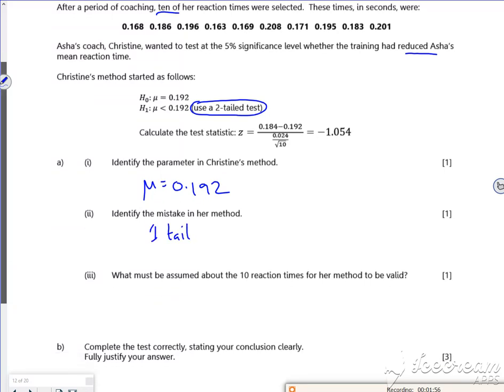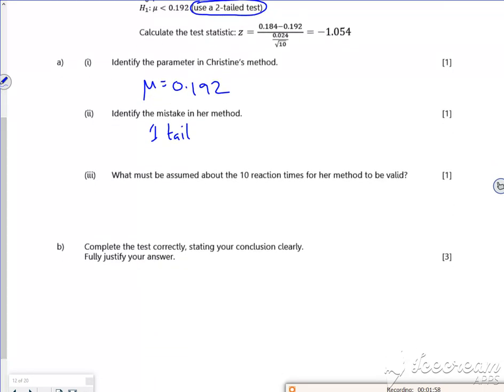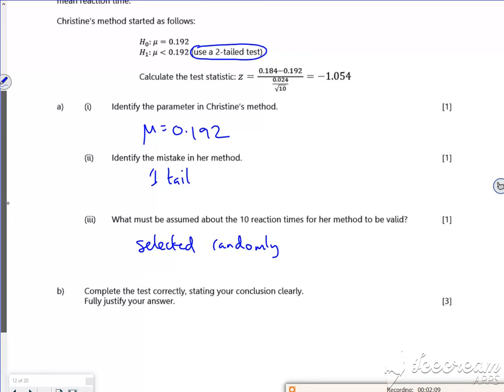It says what must be assumed about the 10 reaction times for it to be valid. Selected randomly, which might have done it like hundreds of times. So selected randomly is good.